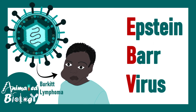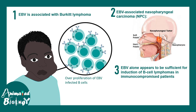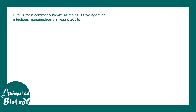First we are going to talk about Epstein-Barr virus, a known causative agent for Burkitt's lymphoma. Burkitt's lymphoma involves overproliferation of EBV-infected B cells. EBV was previously known in the context of mononucleosis in young adults.